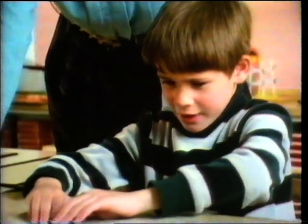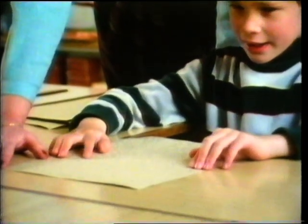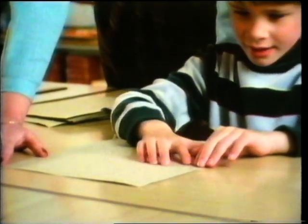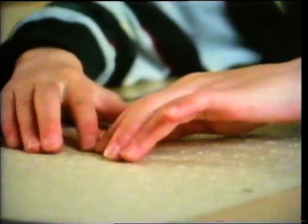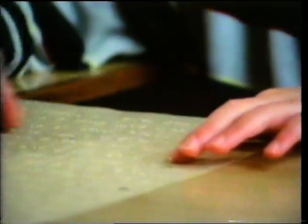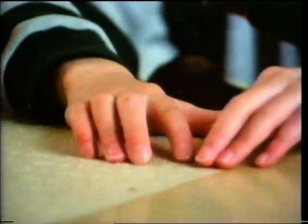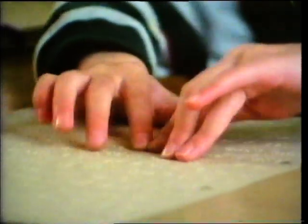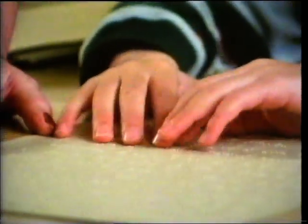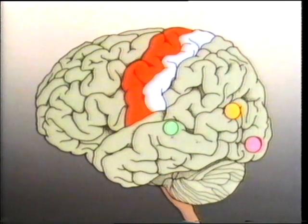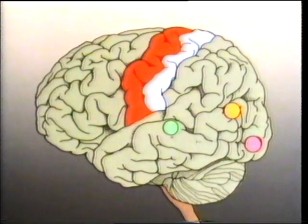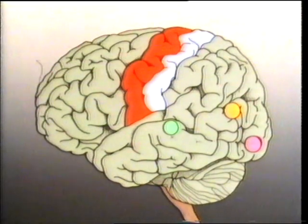This boy's been blind since he was born. He's feeling the Braille through his fingertips. Another important brain area has to do with the sense of touch — it's here, next to the motor area. How do we know these things about the geography of the brain? Which parts control which activities?